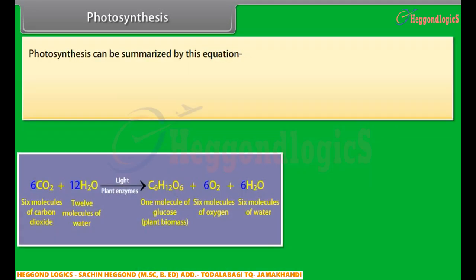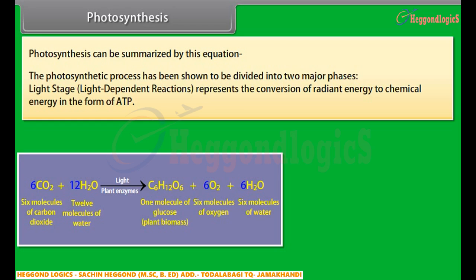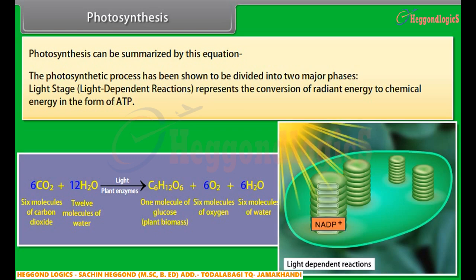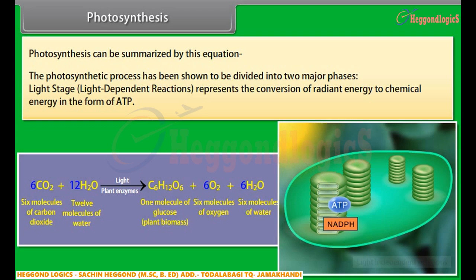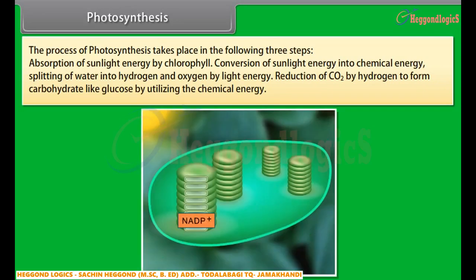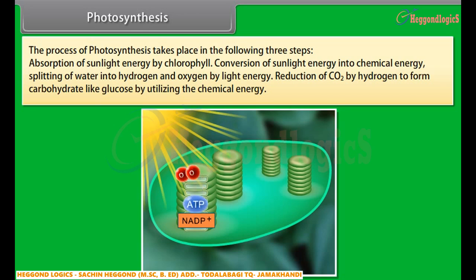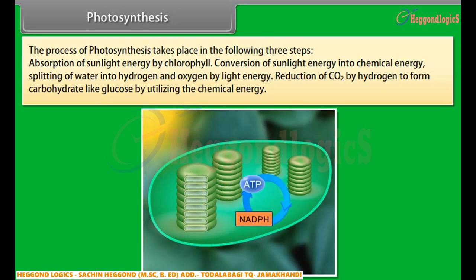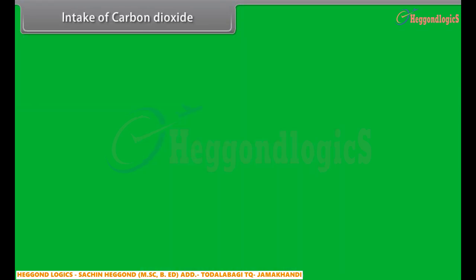The photosynthetic process is divided into two major phases. The light stage — light-dependent reactions — represents the conversion of radiant energy to chemical energy in the form of ATP. The dark stage — light-independent reactions — represents the enzymatic synthesis of carbohydrate intermediates by utilization of the ATP produced during the light stage. The steps of photosynthesis include: absorption of sunlight energy by chlorophyll, conversion of sunlight energy into chemical energy, splitting of water into hydrogen and oxygen by light energy, and reduction of CO2 by hydrogen to form carbohydrates like glucose.